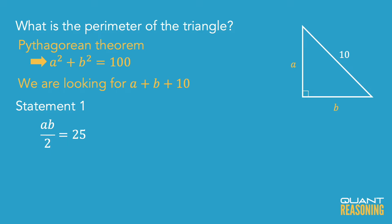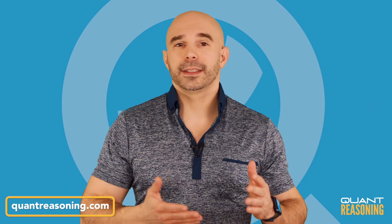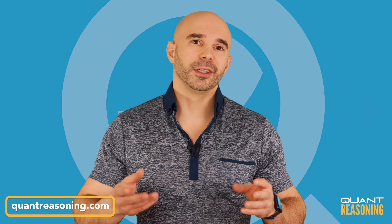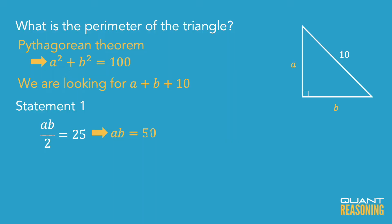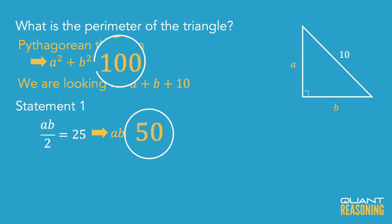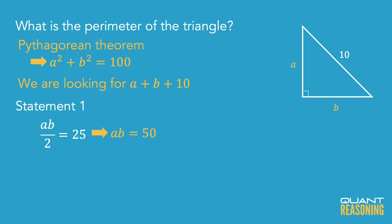Statement 1 gives us the product of those two sides. The area of a right triangle is half the product of the two legs, and we're told that area is 25. So if half the product is 25, the product is 50. If you know the product and you also know the sum of the squares, can you find the sum?